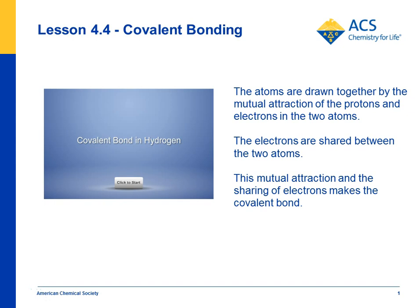In lesson 4.4, students are introduced to the idea of covalent bonding. Students have already seen that atoms have a positive nucleus and negative electrons, but why would one atom bond to another?